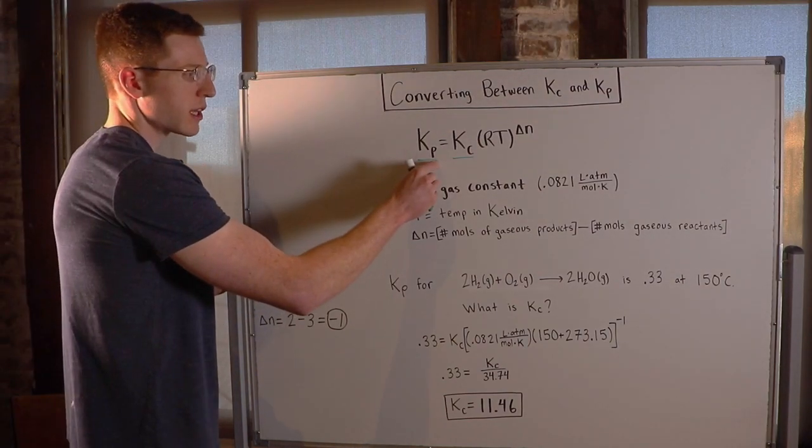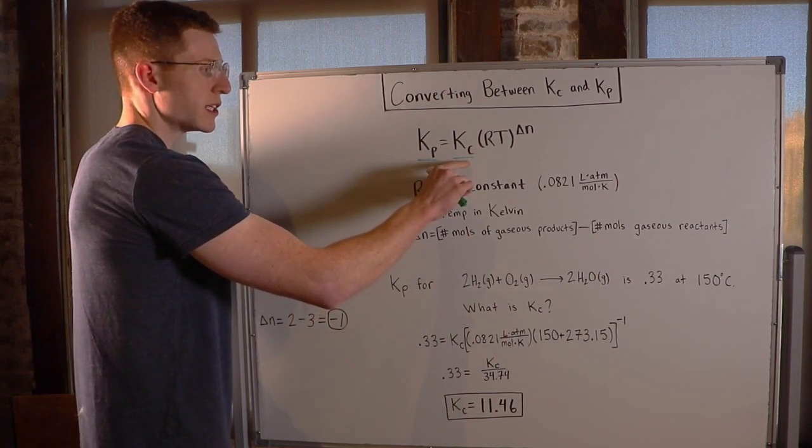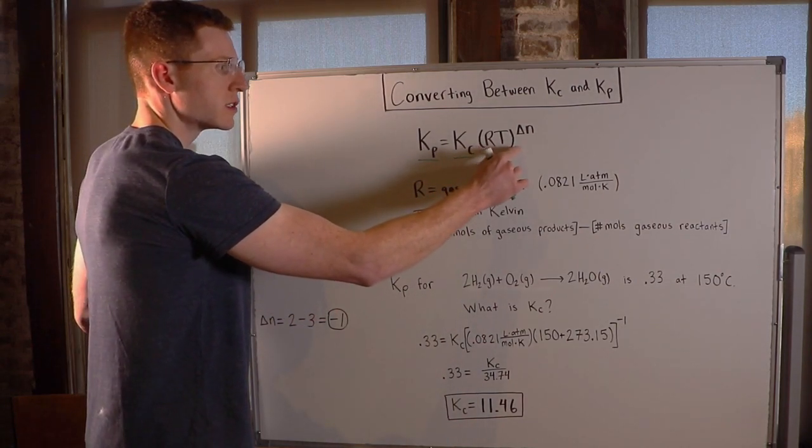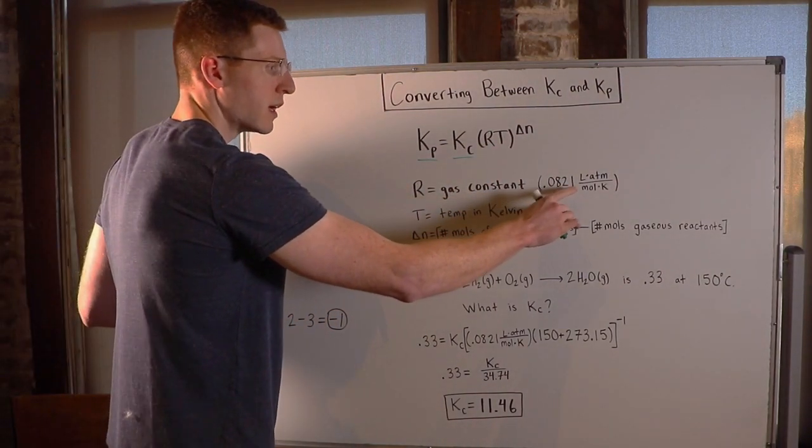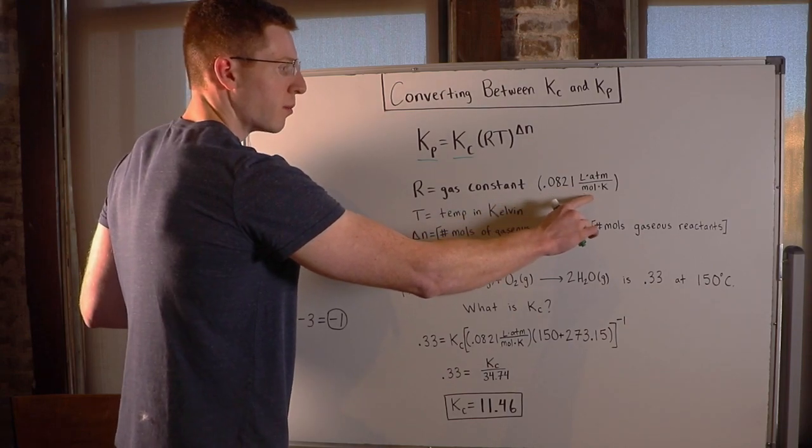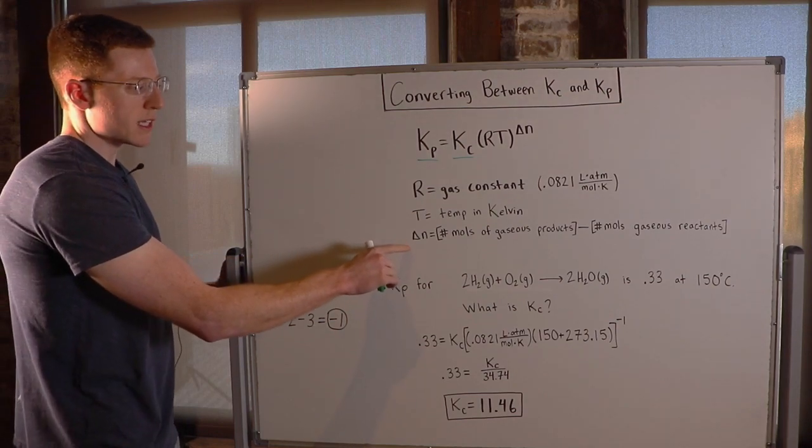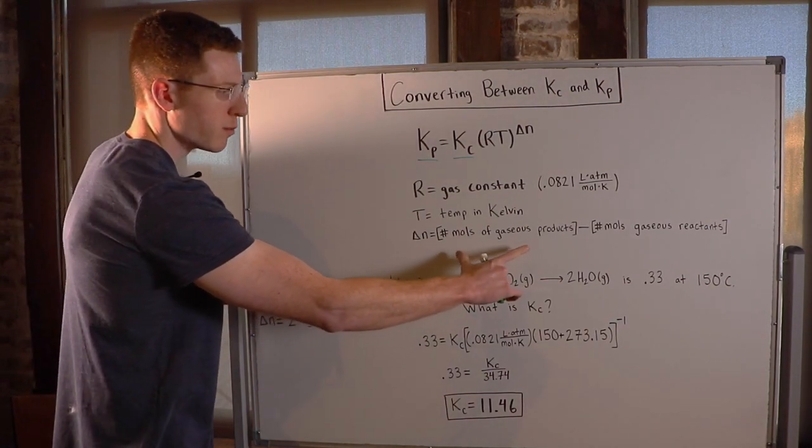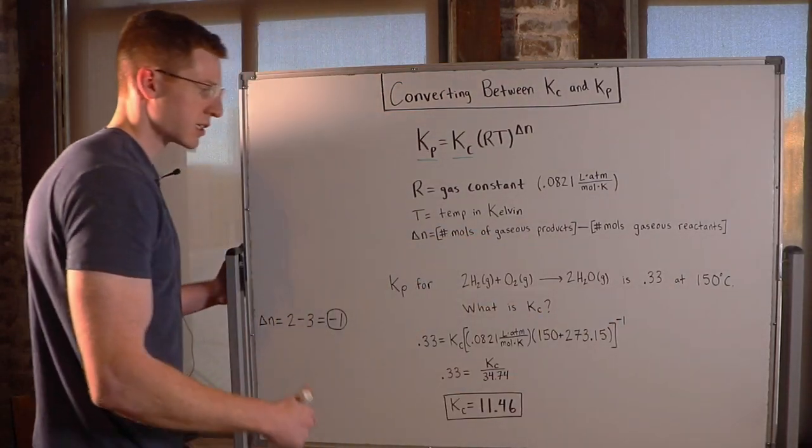So you can see here the relationship between Kp and Kc. Kp equals Kc times RT to the delta N. R is the gas constant, 0.0821 liters times atmospheres over mole times Kelvin. T is the temperature in Kelvin, and delta N is the number of moles of gaseous products minus the number of moles of gaseous reactants.